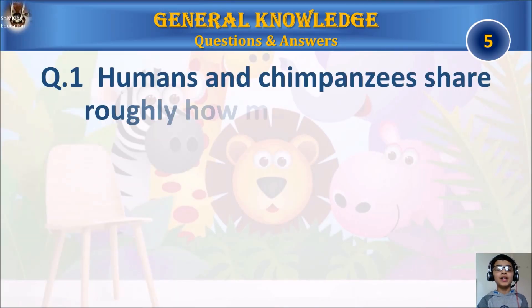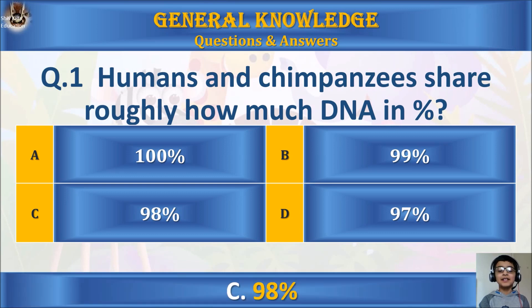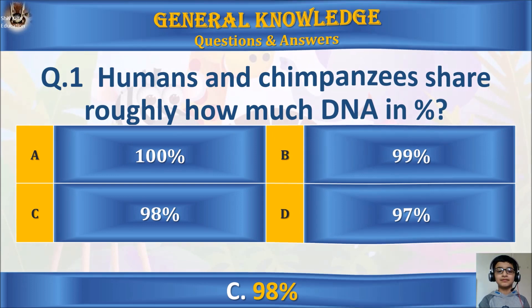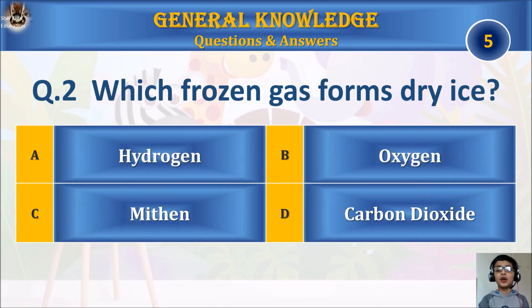Question 1: Humans and chimpanzees share roughly how much DNA in percentage? A) 100%, B) 99%, C) 98%, or D) 97%? Your time starts. The answer is C) 98%.